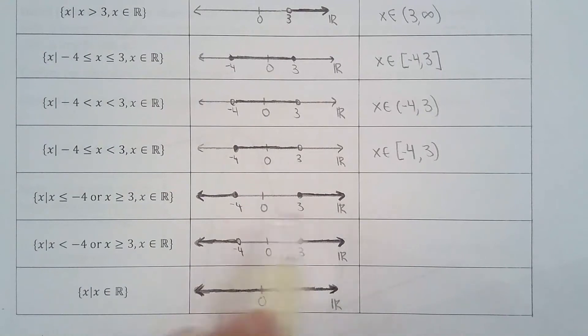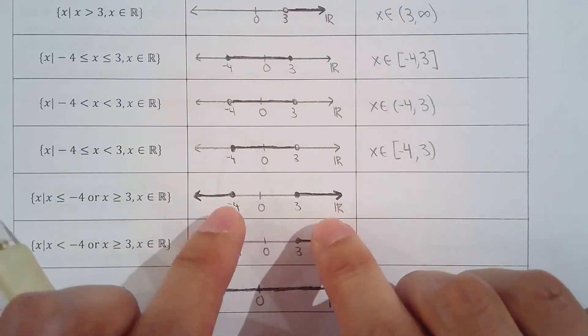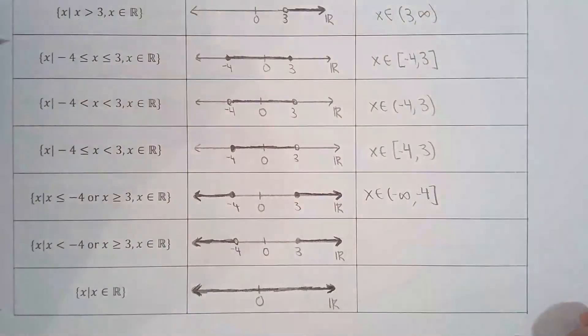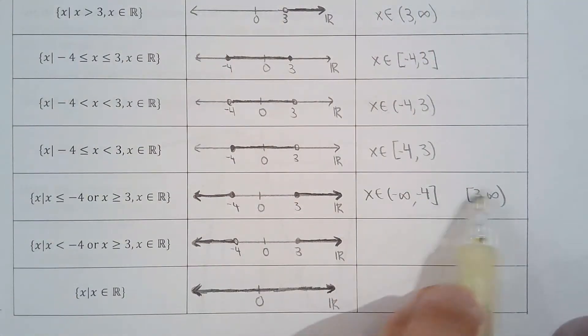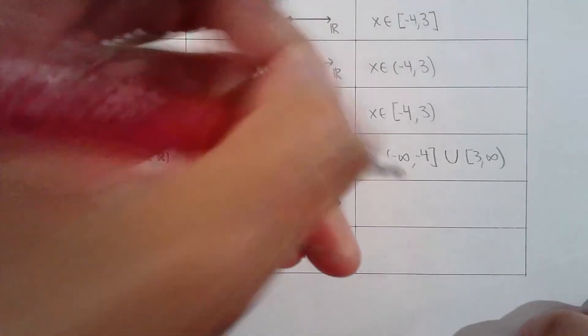Now be careful — if you look at the number line you see two intervals that are not joined. There's a gap between them, so we call this disjointed. You can't state these highlighted values using one interval; you have to use two intervals. We use the union symbol to say x can be in this interval or in that interval. You need the union symbol when the intervals are disjointed — meaning there's a break in the number line.